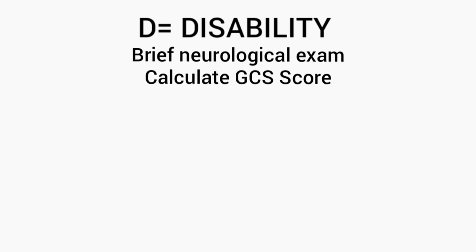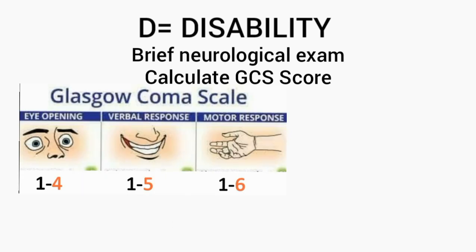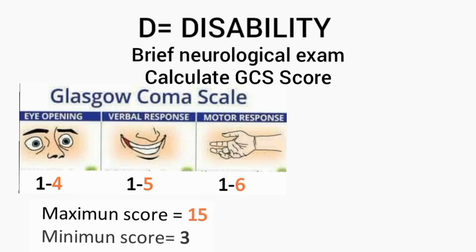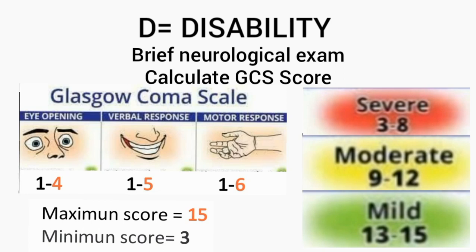After A, B, and C are complete, the patient is evaluated for D — disability — by a brief neurological examination to calculate the Glasgow Coma Scale score. It evaluates eye-opening on a scale of 1 to 4, verbal response 1 to 5, and motor response 1 to 6, giving a maximum score of 15 and minimum of 3. Patients with a score of 3 to 8 have severe disability, 9 to 12 moderate disability, and 13 to 15 mild disability. All patients with a GCS score of 8 or less require intubation.